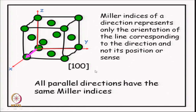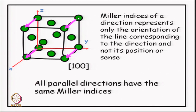One more important point before looking at more examples. Miller indices of a direction represent only the orientation of the line, not its particular position in space or its sense. Not only the positive x axis but the negative x axis will also be represented by [100]. Furthermore, because of the freedom of choosing the origin, if we have parallel lines elsewhere I can again choose my origin there and that line becomes my x axis. So all parallel directions have the same Miller indices.